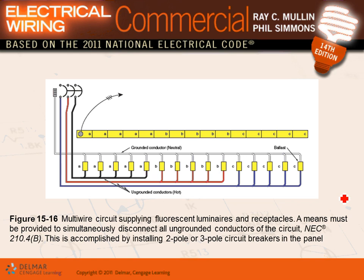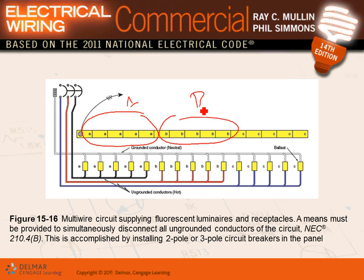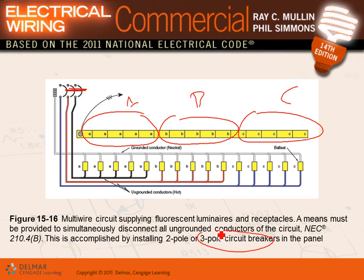Here's how you wire a bunch of luminaires. In a three-phase system, you can group them together — all these fixtures on phase A, these on phase B, and these on phase C — all using a shared neutral. They all have to be disconnectable. You can use single-pole or three-pole circuit breakers, as long as they are simultaneously disconnected. Multi-wire branch circuits must have a simultaneously-disconnected overcurrent protection device.